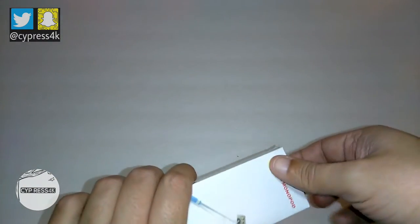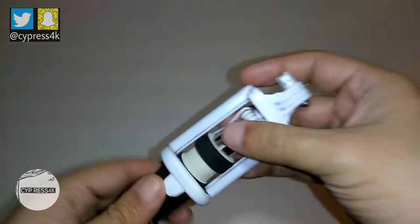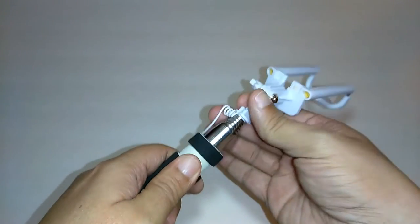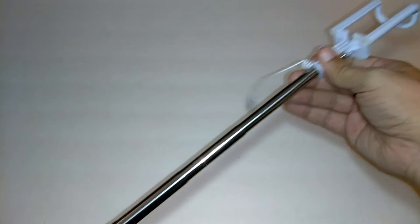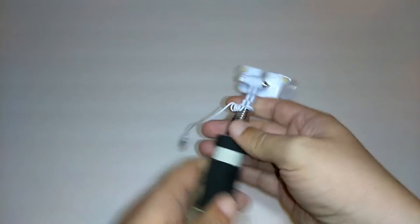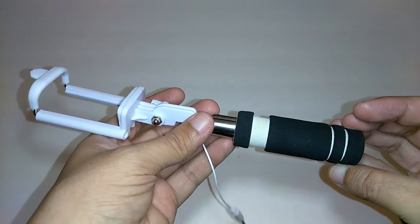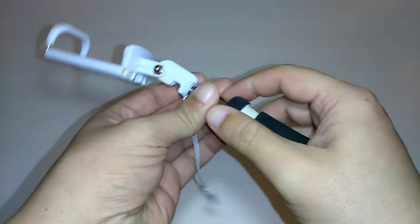This is gonna be a real simple project. As you can see, this is a collapsible monopod style selfie stick, but for a dollar we could turn this into a V3 pocket bellows.